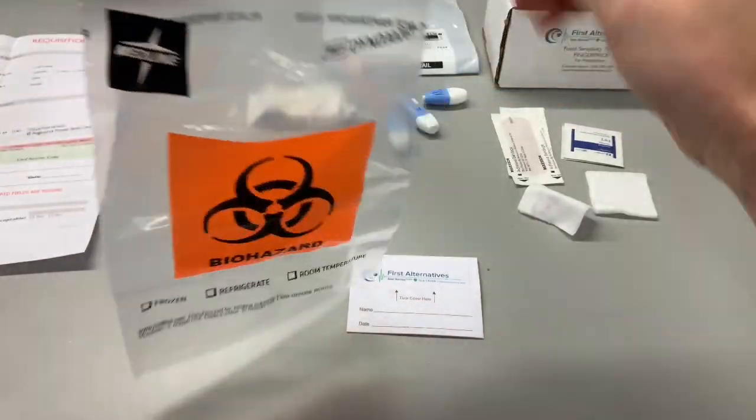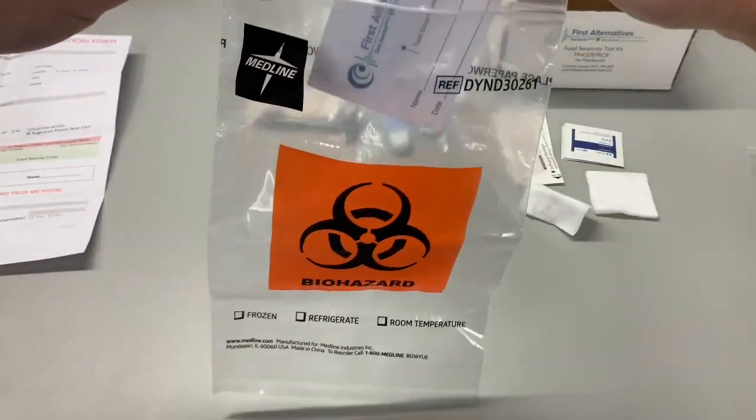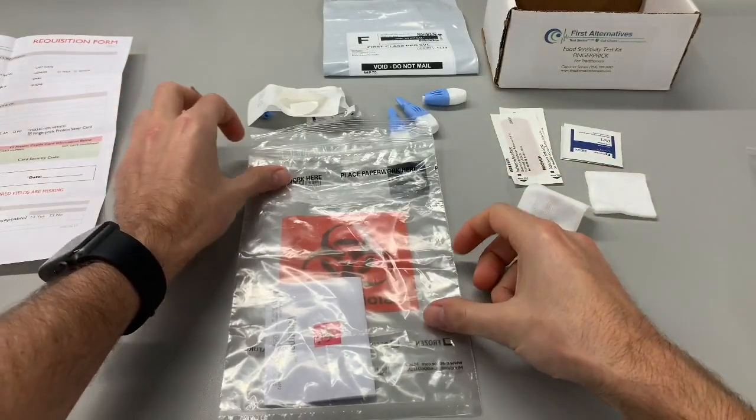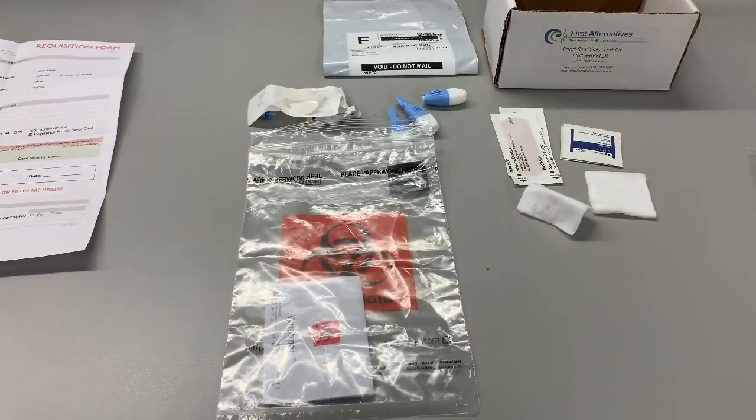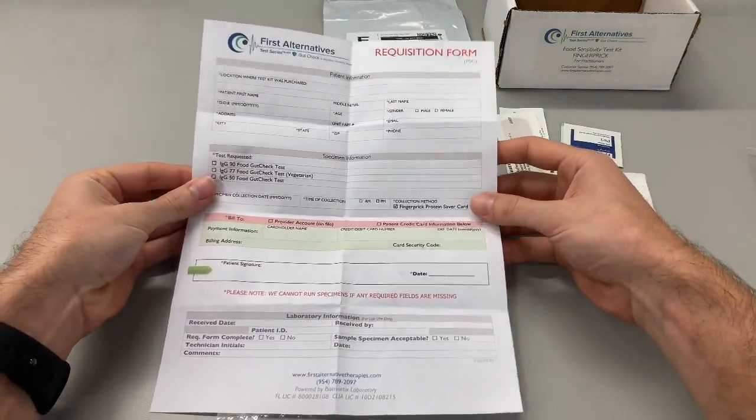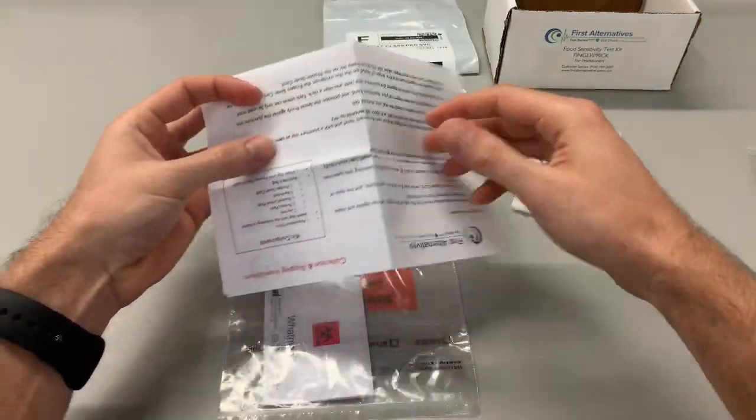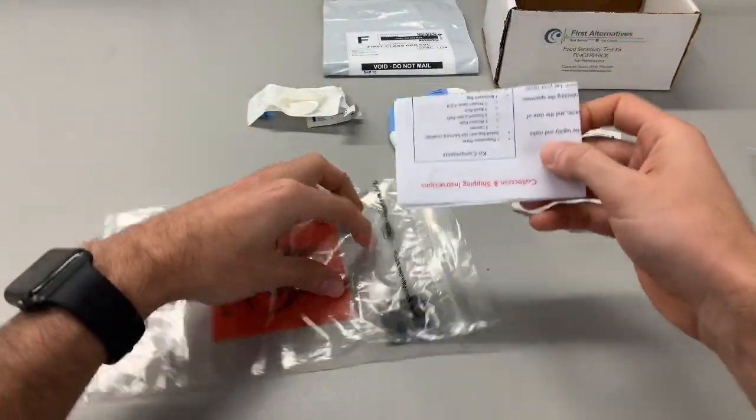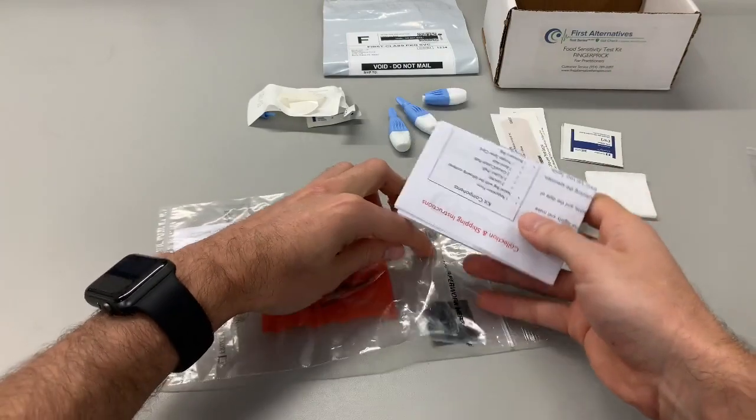Place the card inside the Ziploc pouch of the biohazard bag and turn over the biohazard bag. Make sure the requisition form is completed and fold it up. Place the requisition form inside the back pouch of the biohazard bag.